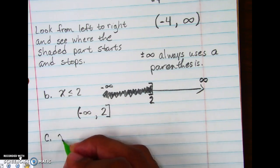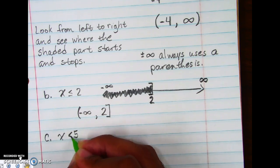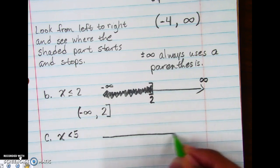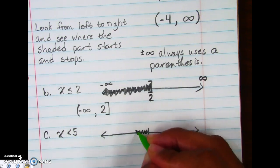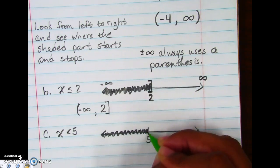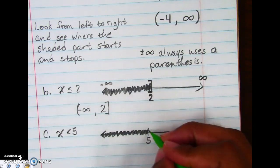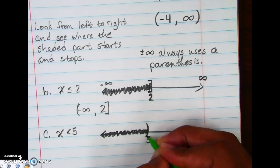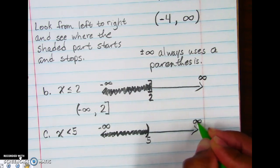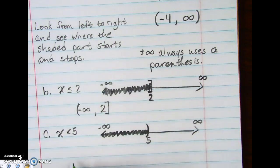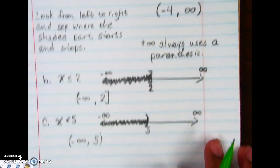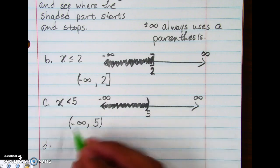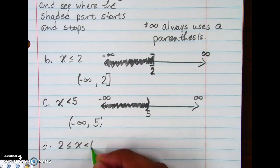Let's go to C. We graph it out again — put 5 in the middle. X is less than 5, so we shade in this direction. We use a parenthesis because it doesn't have an equal sign. Put our infinities there and go from left to right. The shaded part starts at negative infinity and goes all the way to 5. So we write: negative infinity, comma, 5, with a parenthesis on 5 and always a parenthesis on infinity.